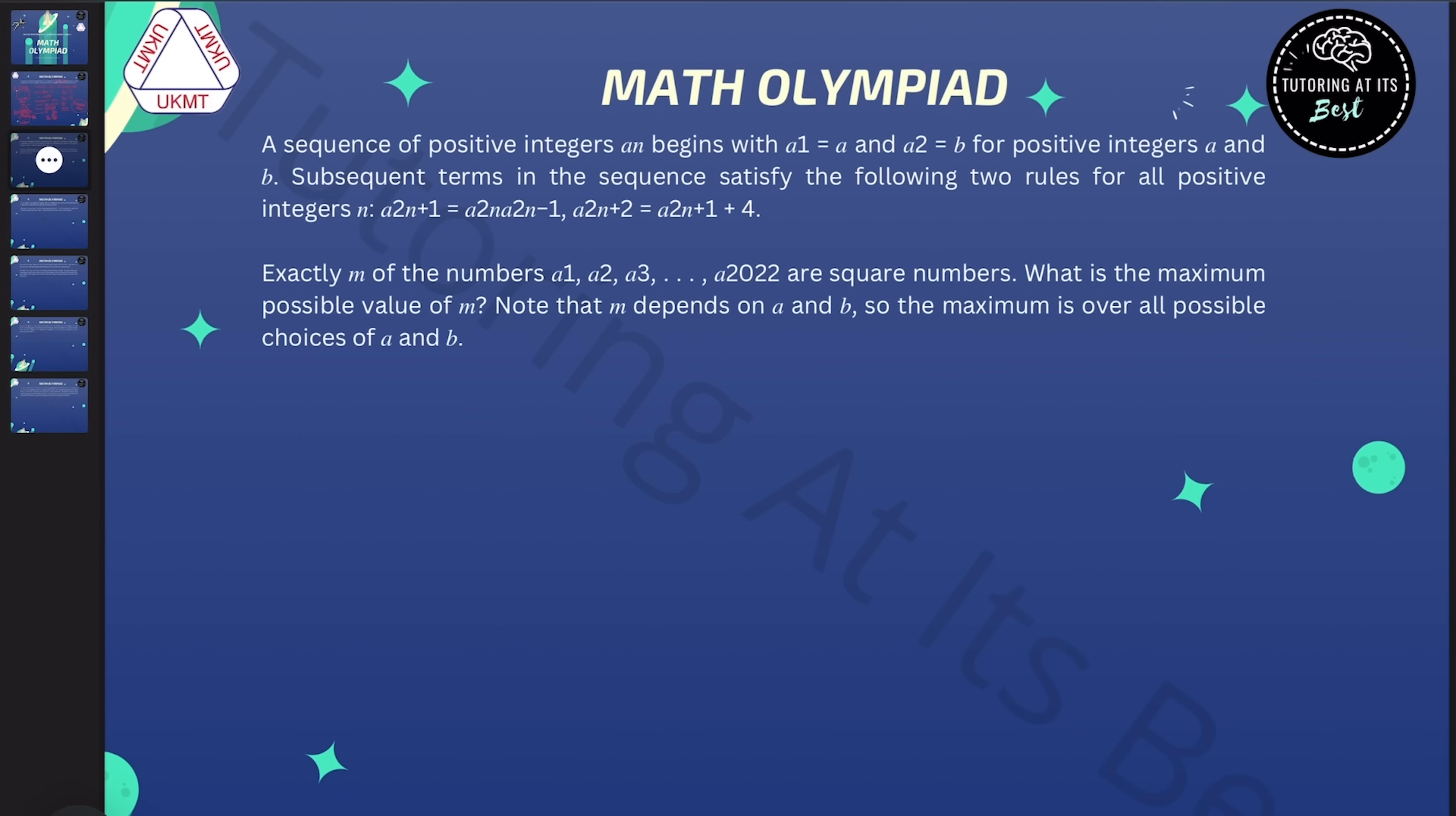Exactly m of the numbers a1, a2, a3, all the way up to a2022 are square numbers. So what is the maximum possible value of m? Note that m depends on a and b, so the maximum is over all possible choices of a and b.